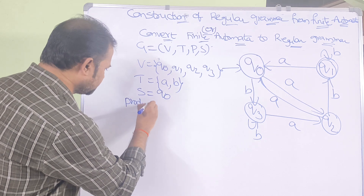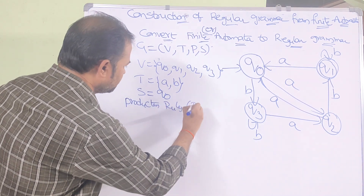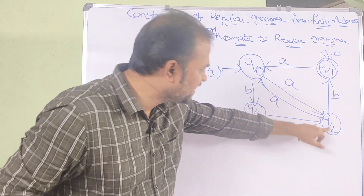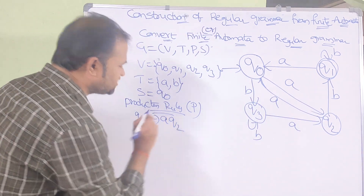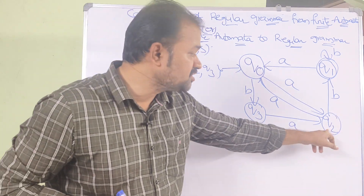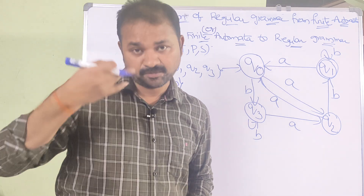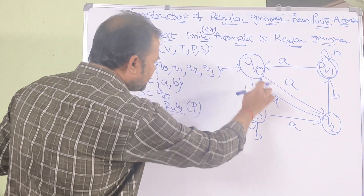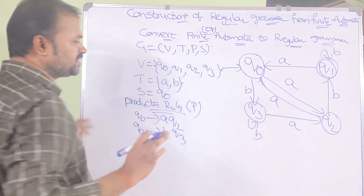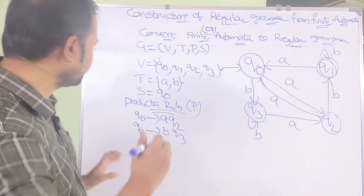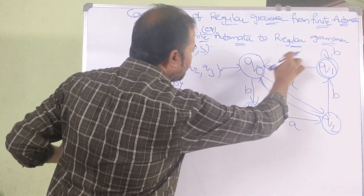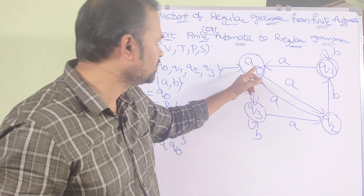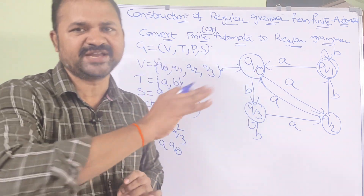Now let us write the production rules P. For q0: q0 on applying a goes to q2, so q0 → a q2 (q2 is not the final state, so no extra production). q0 on applying b goes to q3, so q0 → b q3 (q3 is not the final state). For q1: q1 on applying a goes to q0, so q1 → a q0 (q0 is not the final state, no extra production needed).